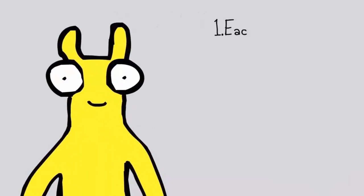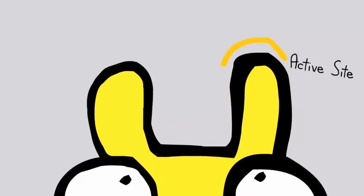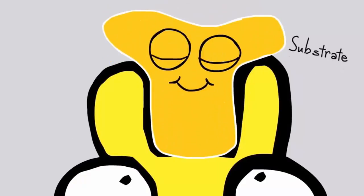Number 1. Each enzyme has an active site. This is the groove in the enzyme where the molecules they act on, called substrates, are captured and made to undergo a reaction.